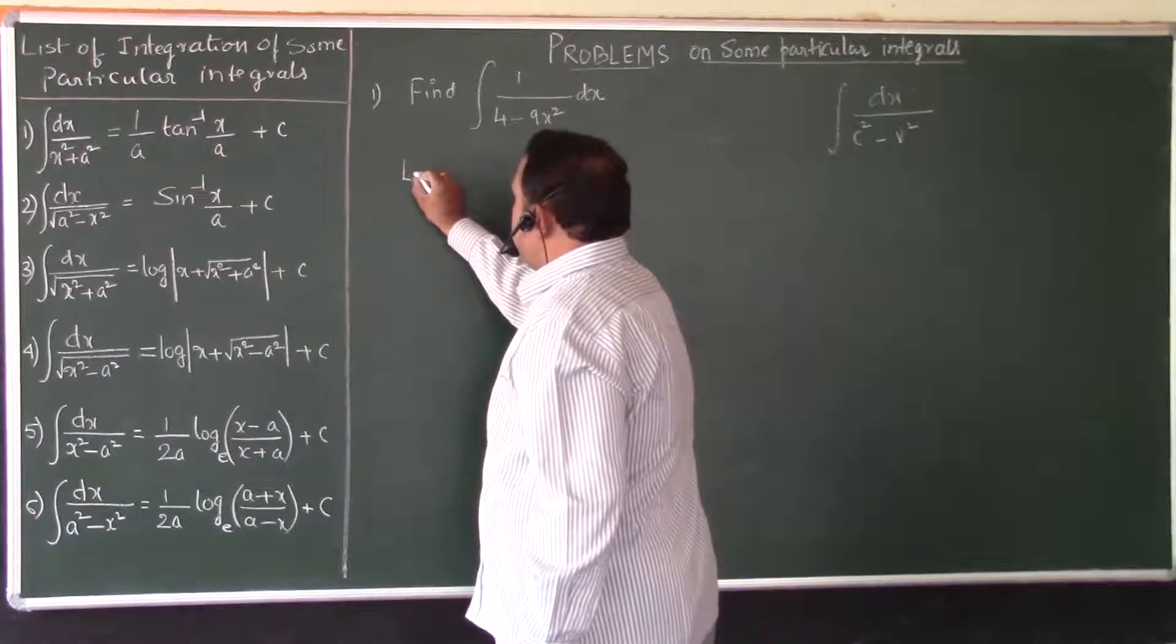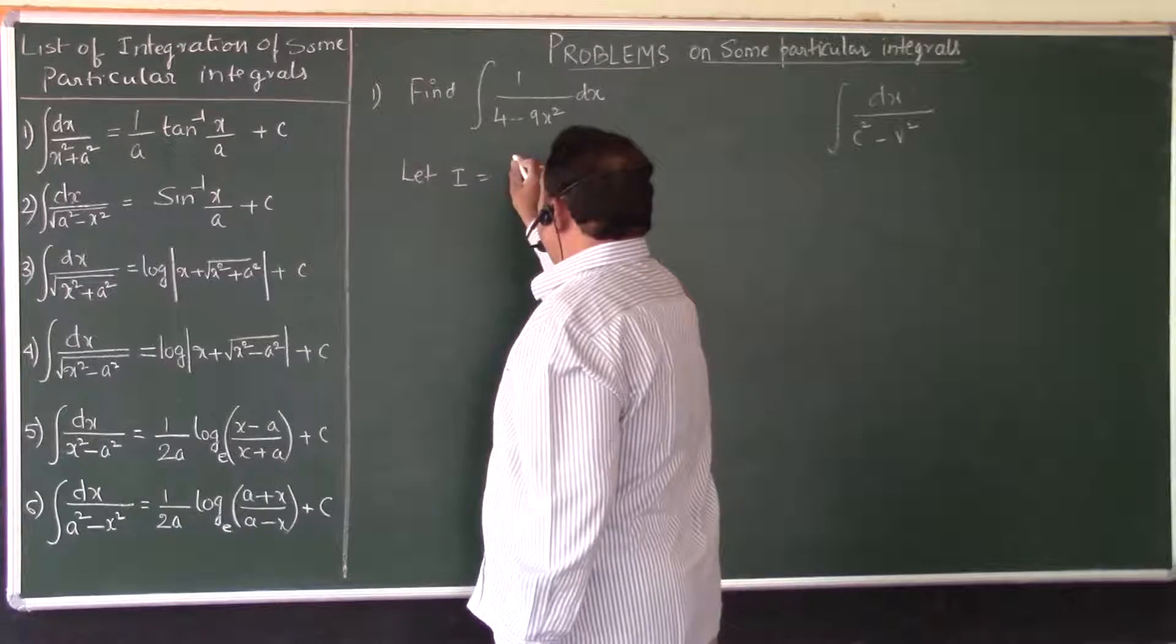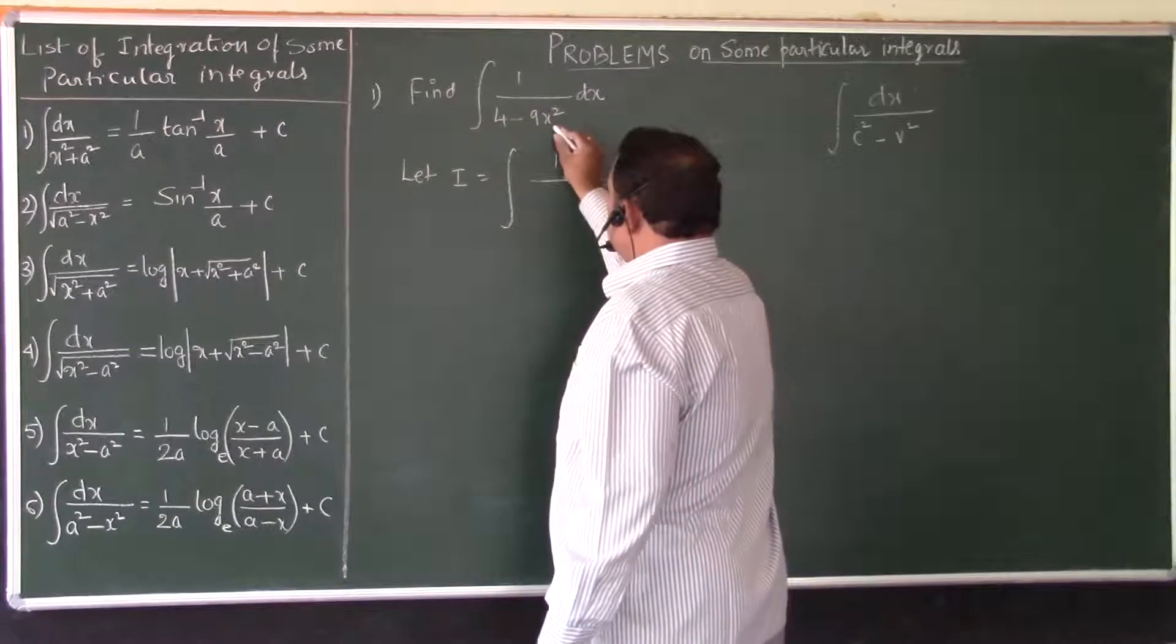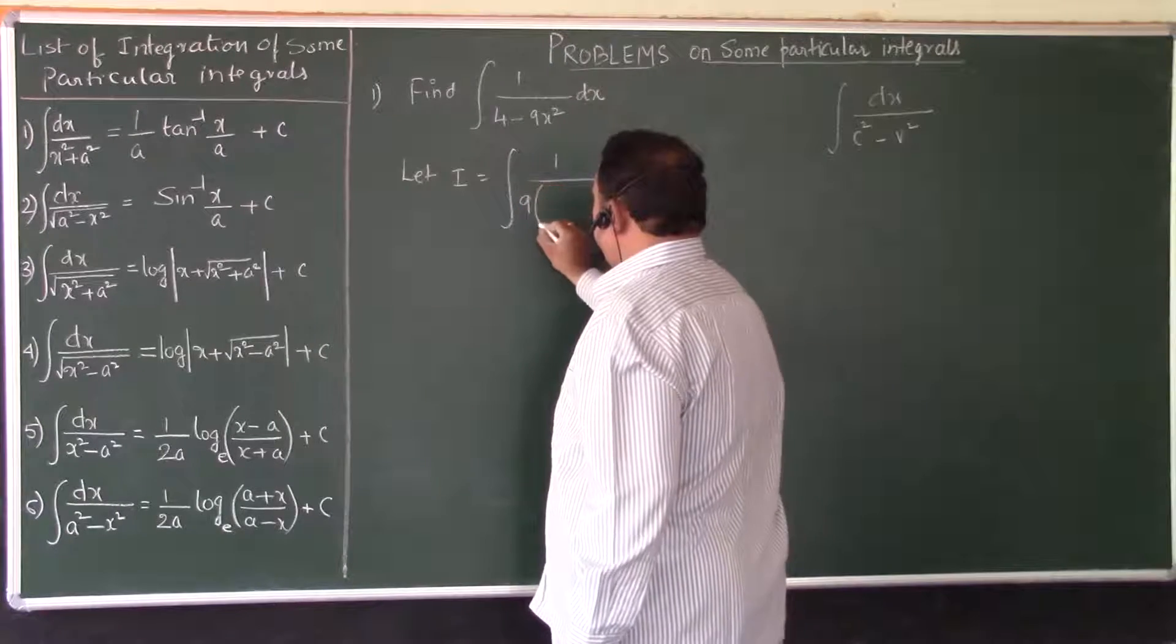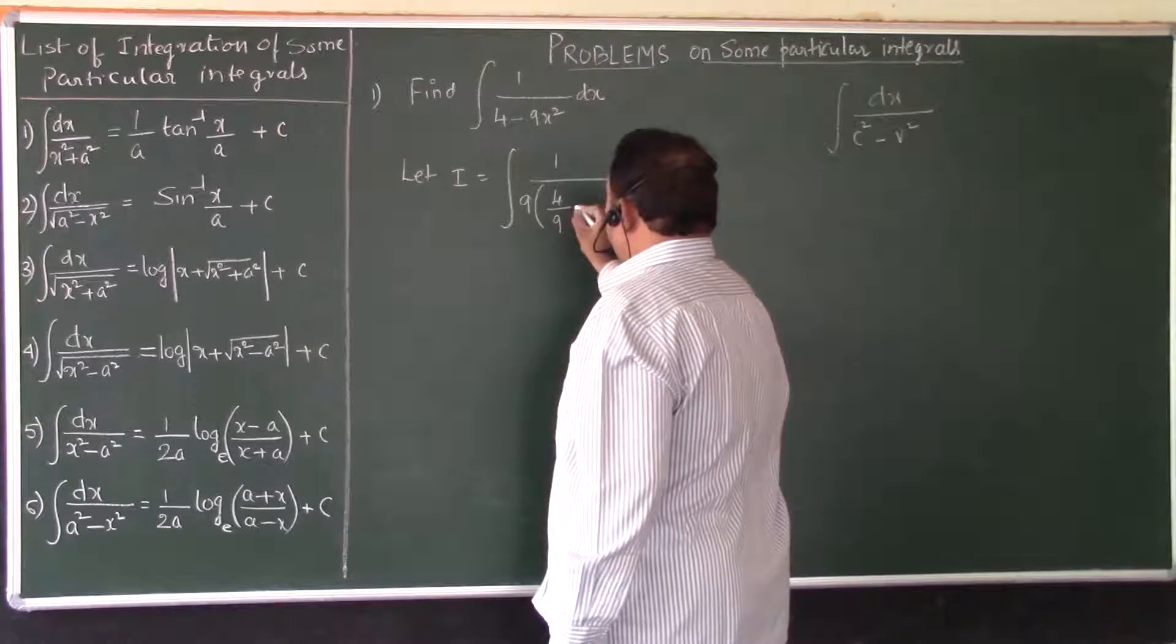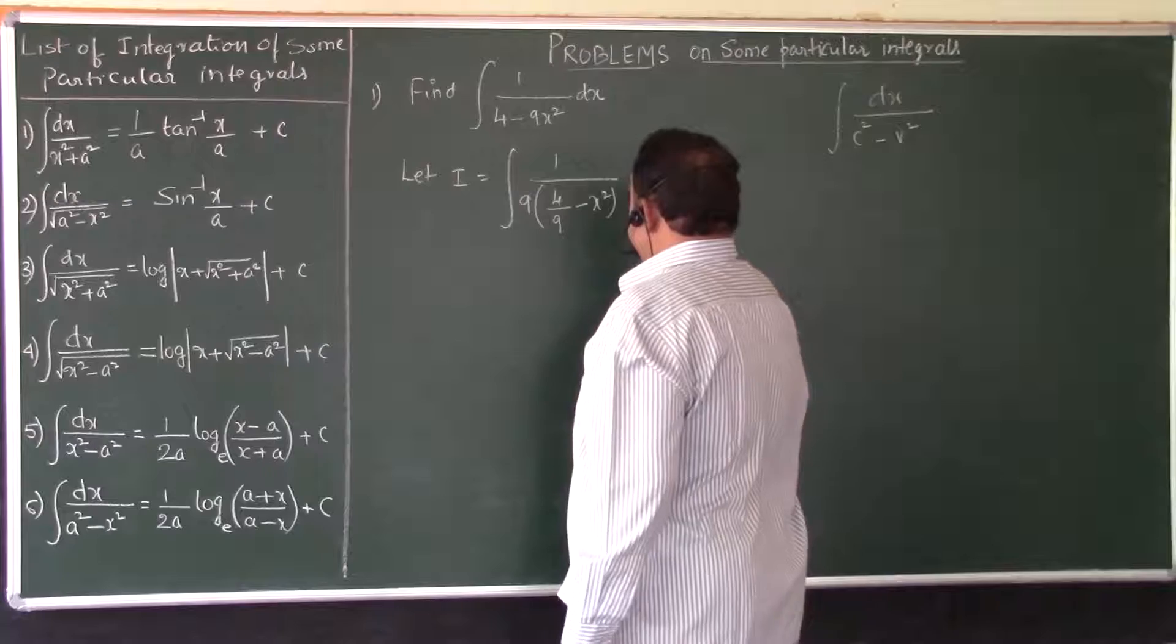So I proceed like this. Let I be equal to integral 1 over, since I want to make the coefficient of x square as 1, I will take 9 common factor, then it becomes 4 by 9 minus x square dx.